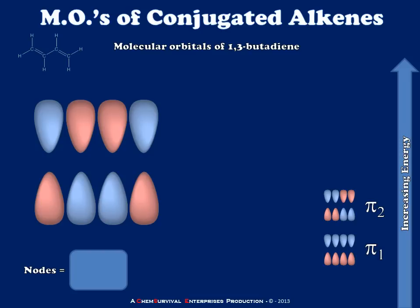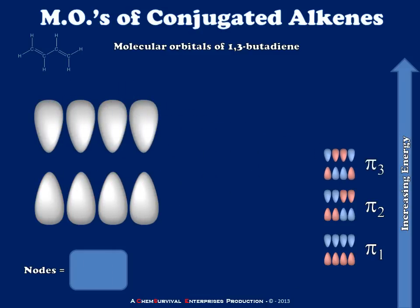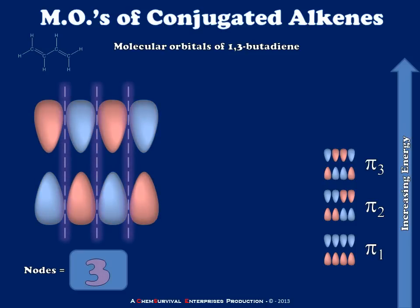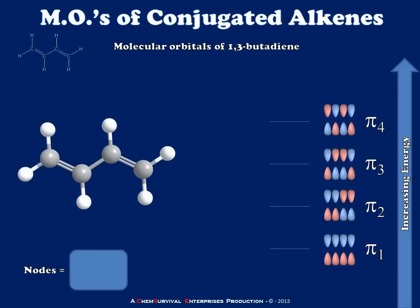A third possible permutation of the up-and-down alignments gives two nodes. Because of the additional node, we place it higher and call this pi3. Finally, the last arrangement is one in which none of the p-atomic orbitals are aligned in phase, giving a molecular orbital with three nodes — this is pi4. So 1,3-butadiene is expected to have four different pi molecular orbitals. Since there are four electrons within the pi system, populating from lowest energy to highest leads to the conclusion that the highest occupied molecular orbital is pi2 and the lowest unoccupied molecular orbital is pi3.